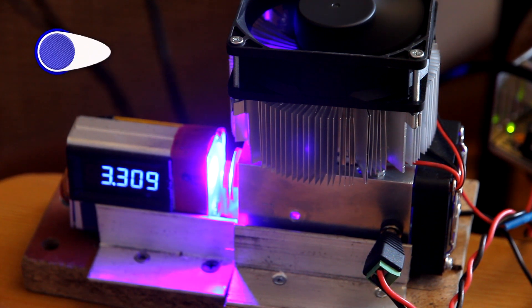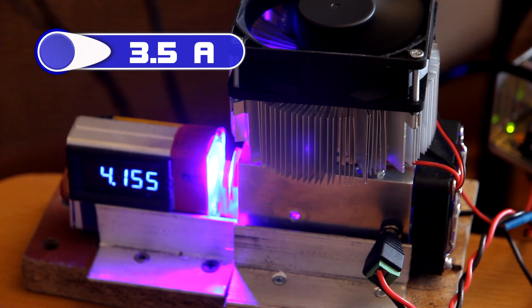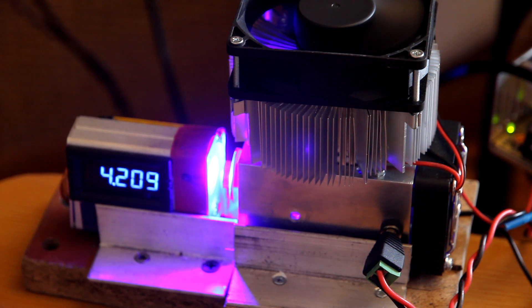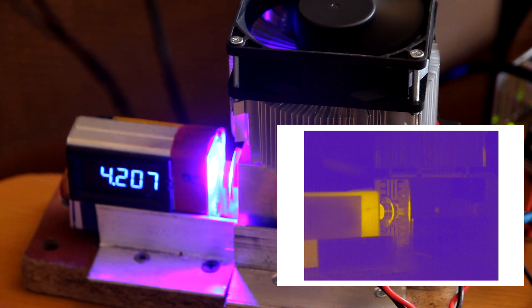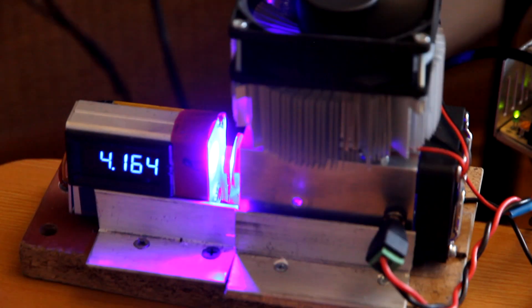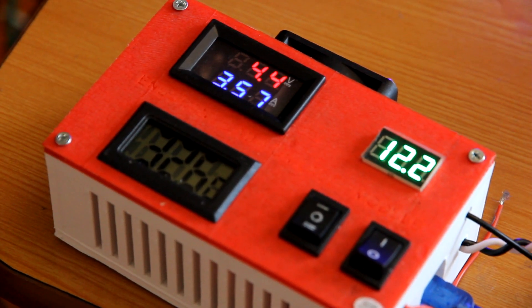We have 4.4 volts on DC-DC and 3.5 amps also on DC-DC. As you can see on the infrared camera, the temperature remains quite low. Actually it's the same as it was before. So TEC cooling cools the laser diode pretty good. Let's see the temperature. So this is 32 Celsius.